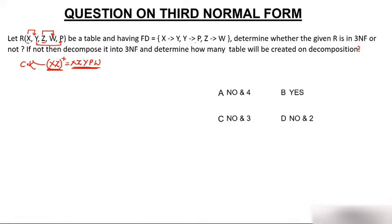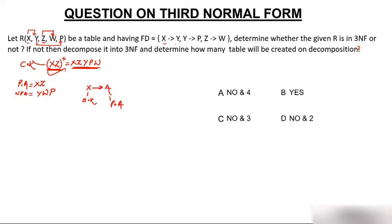Now see the functional dependencies and the definition of 3NF. The definition says: if X to A is a non-trivial functional dependency, then either X should be a super key or A should be a prime attribute. Prime attributes are those which are part of a key — so X and Z are prime attributes. Non-prime attributes are Y, W, and P. The super key is XZ. Checking the first functional dependency X to Y: X is not a super key, and Y is a non-prime attribute, so this functional dependency is not in 3NF.